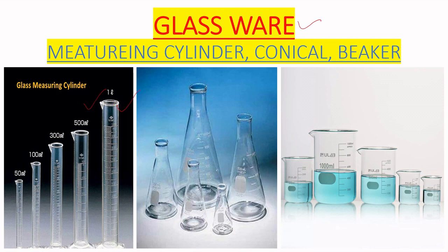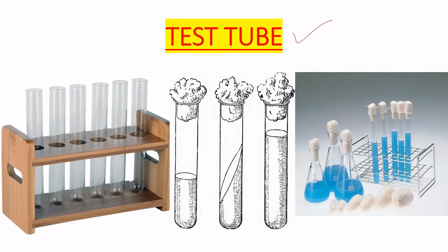Different types of glassware are used in microbiological work — including glass measuring cylinders, conical flasks, and beakers for different purposes. Test tubes are a most common part of the microbiological lab. Test tubes must be cotton-plugged to separate the inner media environment from the outer environment, preventing contamination by airborne microorganisms, and allowing proper autoclave sterilization.